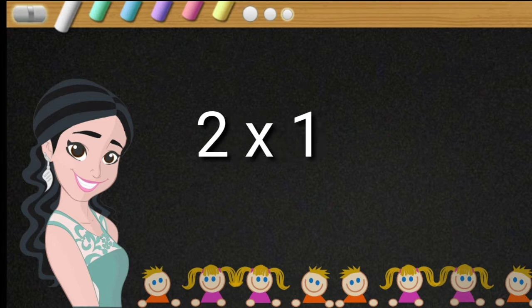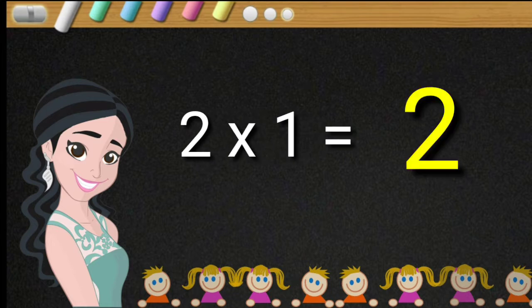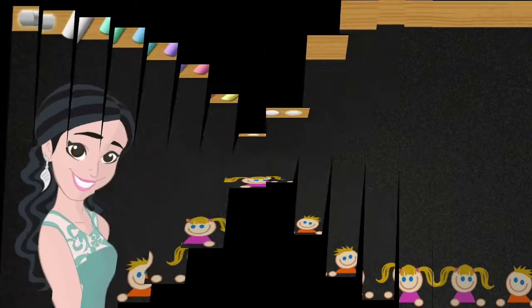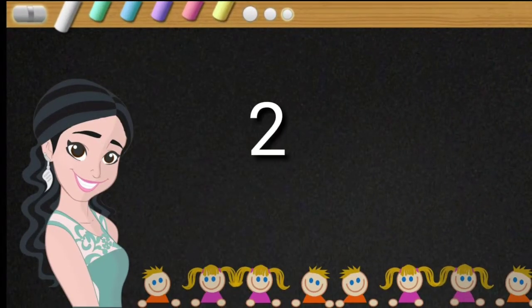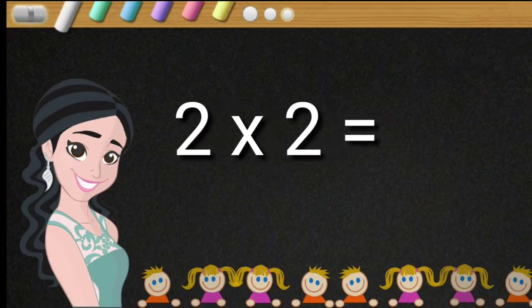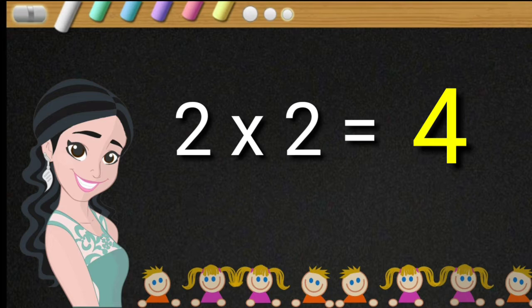Two ones are two. Two ones are two. Two twos are four. Two twos are four.